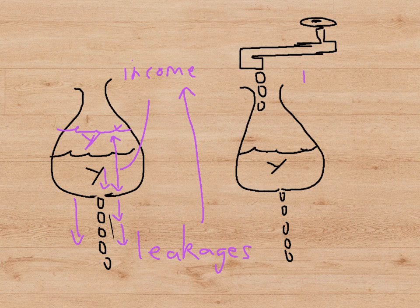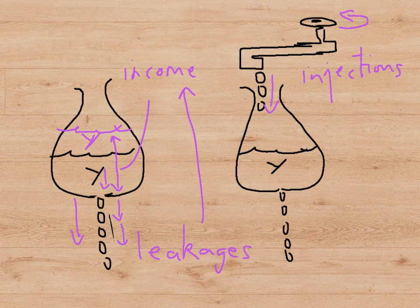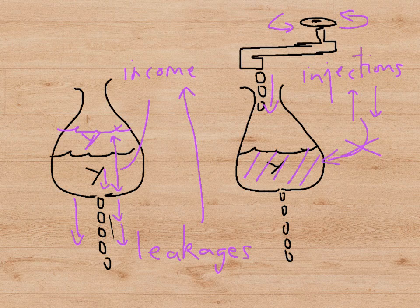On the other hand, let's look at the injections. We can model the injections as a tap, with water coming into our economy being injected by the tap. If we turn the tap on a little bit or turn it off a little bit, the injections will either speed up or slow down, and this has absolutely nothing to do with the amount of water in the plastic bag. So the injections are not connected with the level of national income, whereas the leakages definitely are.